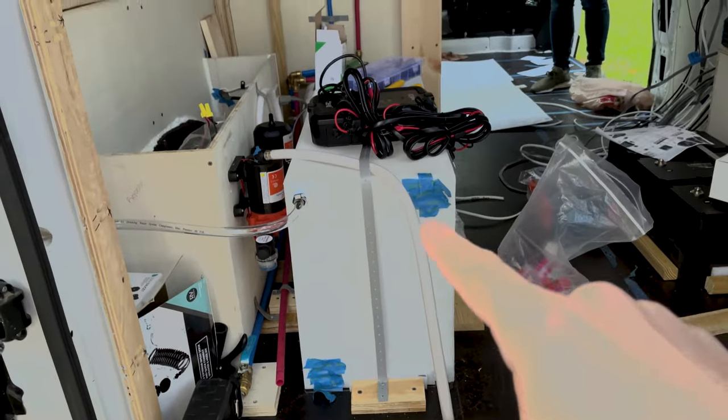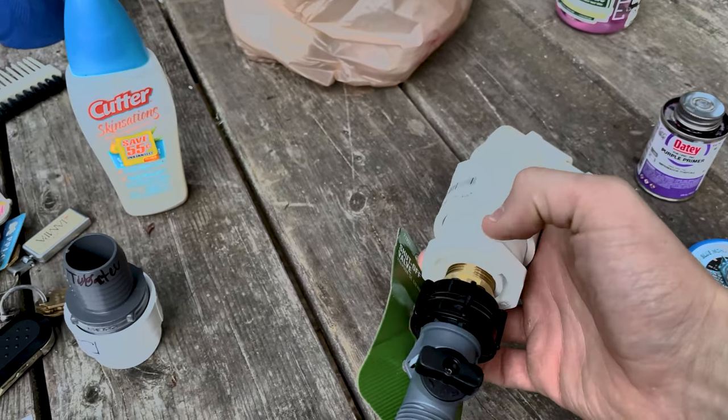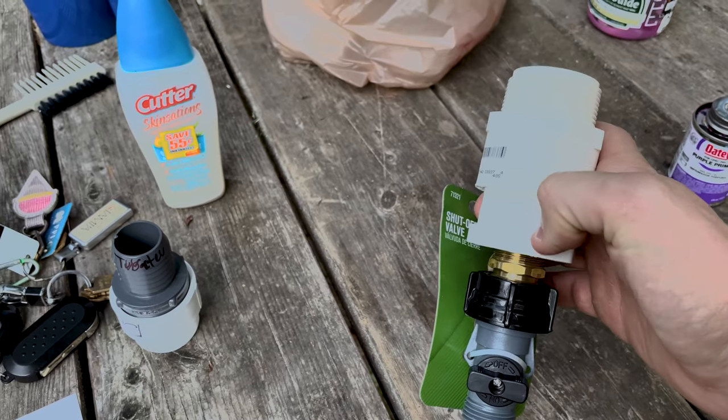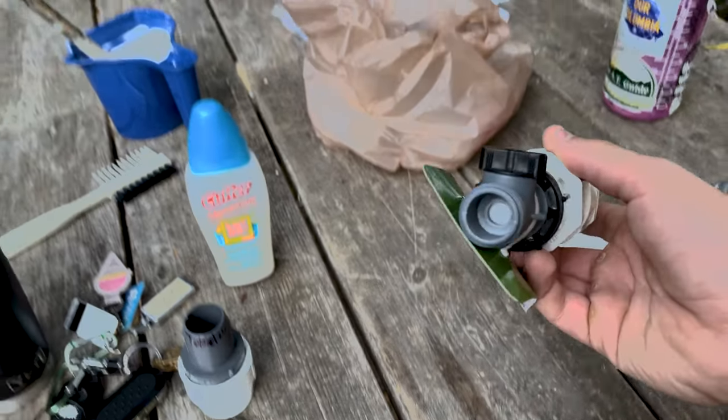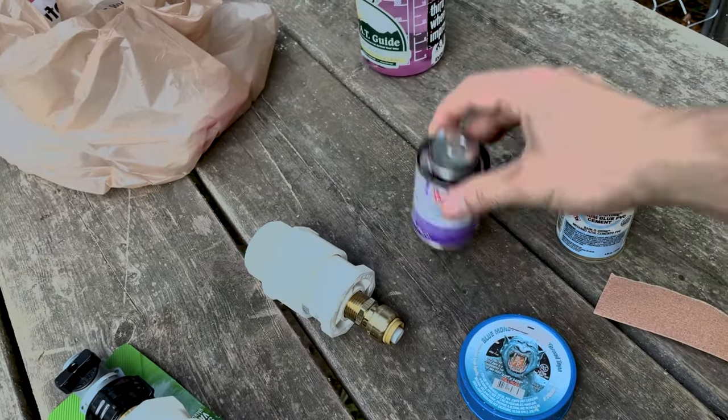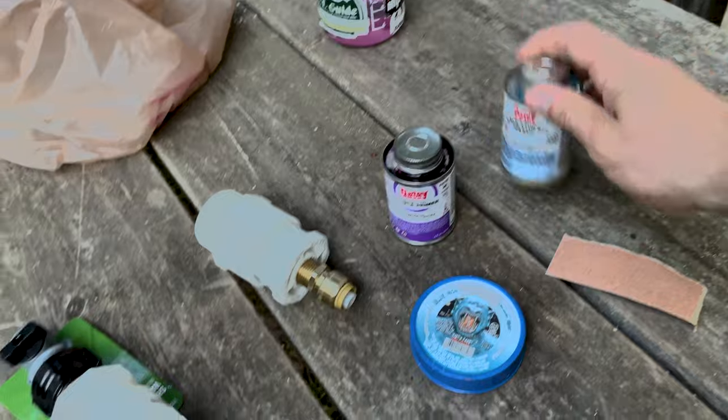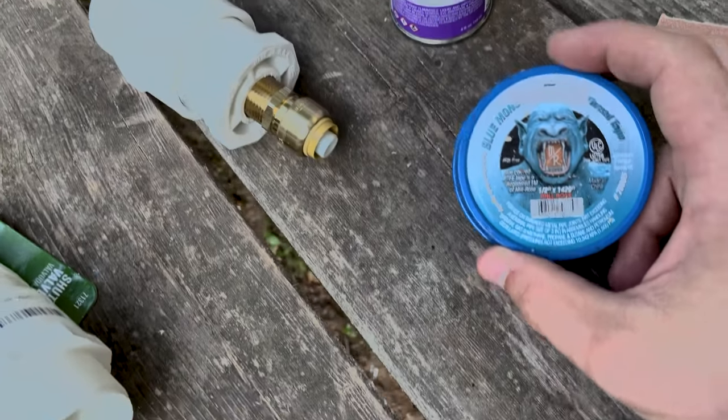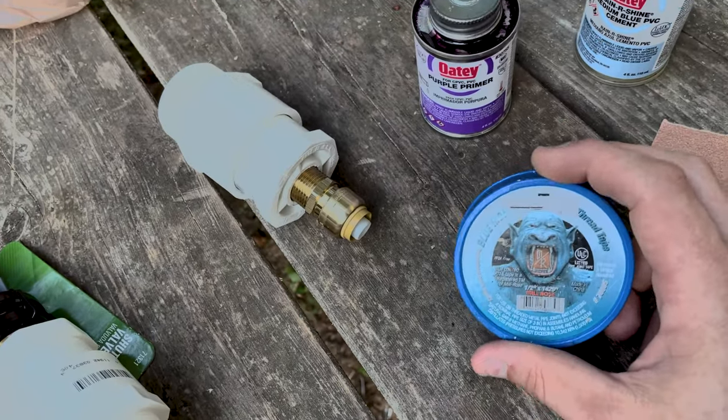We're going to work on filling our one and a half inch threads. But we have an adapter, a bushing to a half-inch male and male sided to basically this ball valve. And what we're going to be using to secure that is our primer and our PVC cement.